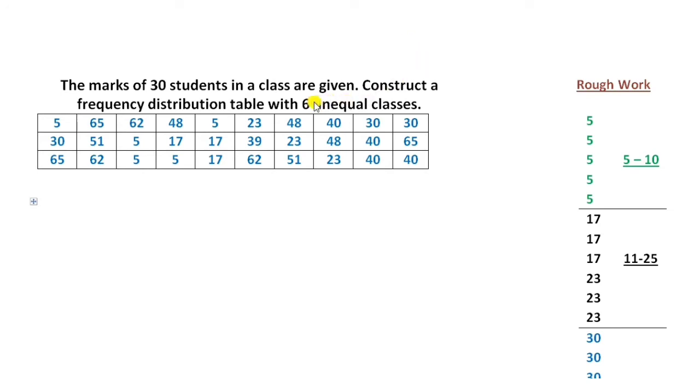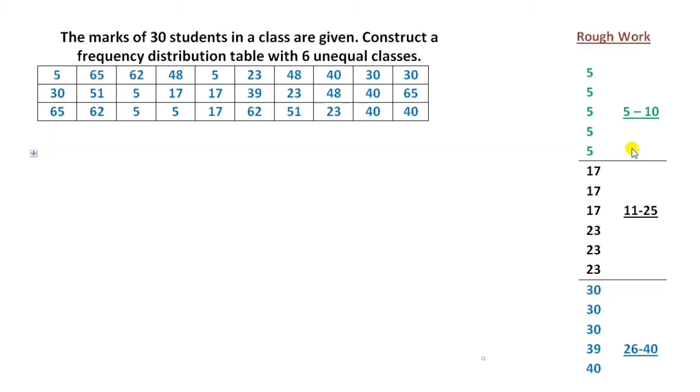Now you have to make six small groups. Each group is actually your class limit. You have full freedom of choosing your own group with your own class width. In my first group, it is 5 to 10, so the last number of this group is 5. I will put a line after the last number 5.